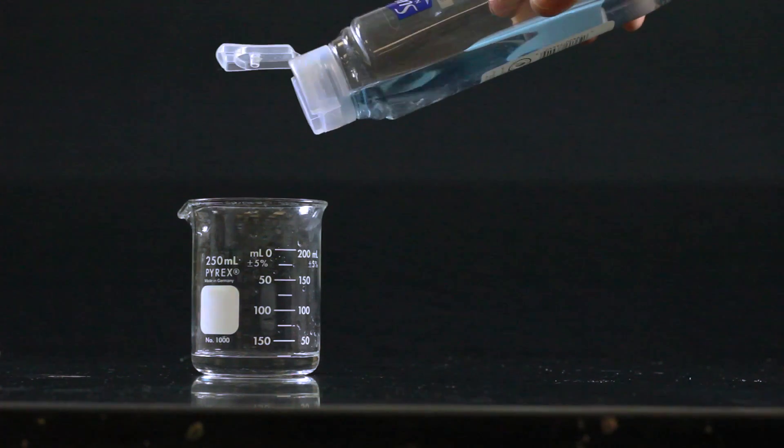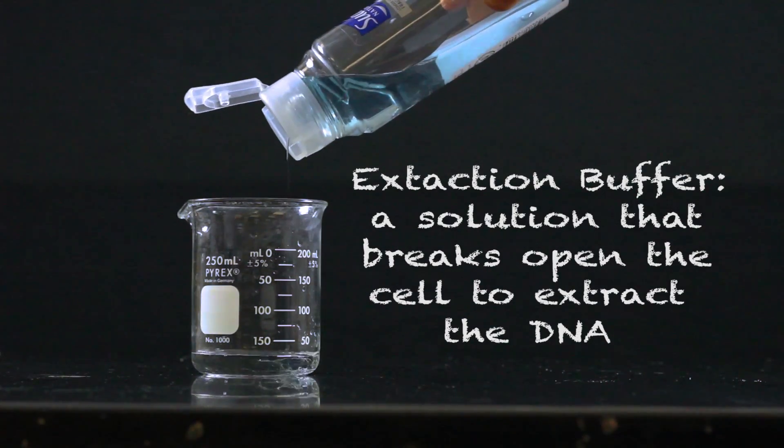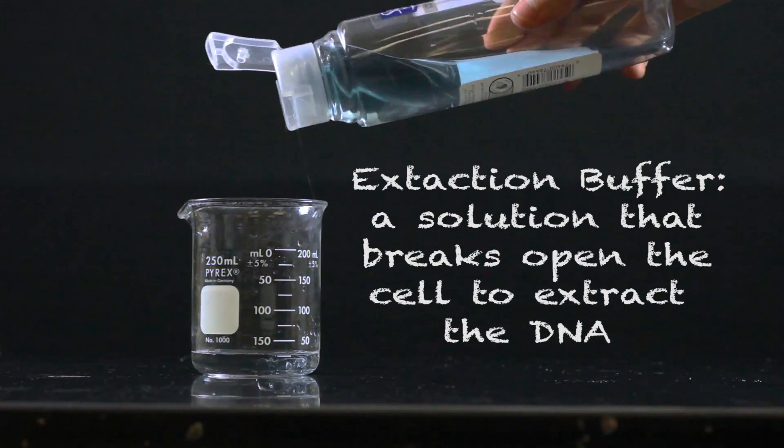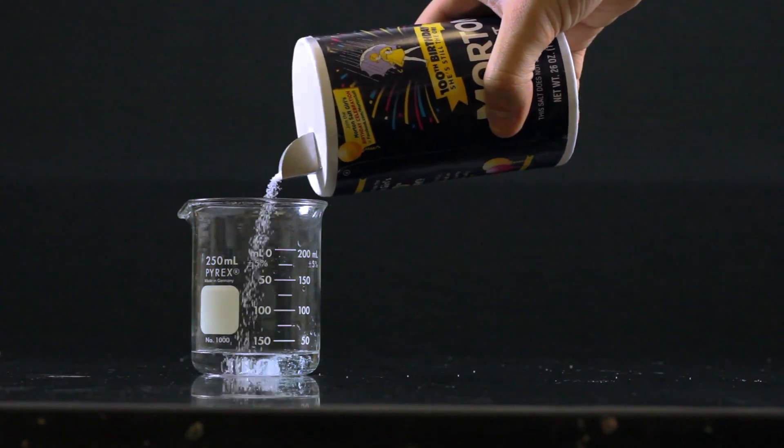To begin with we need to create an extraction buffer. Take 25 milliliters of water and add a tablespoon of clear unscented shampoo as well as a tablespoon of salt. This mixture will break open both the cell and nuclear membranes and release the DNA into solution.